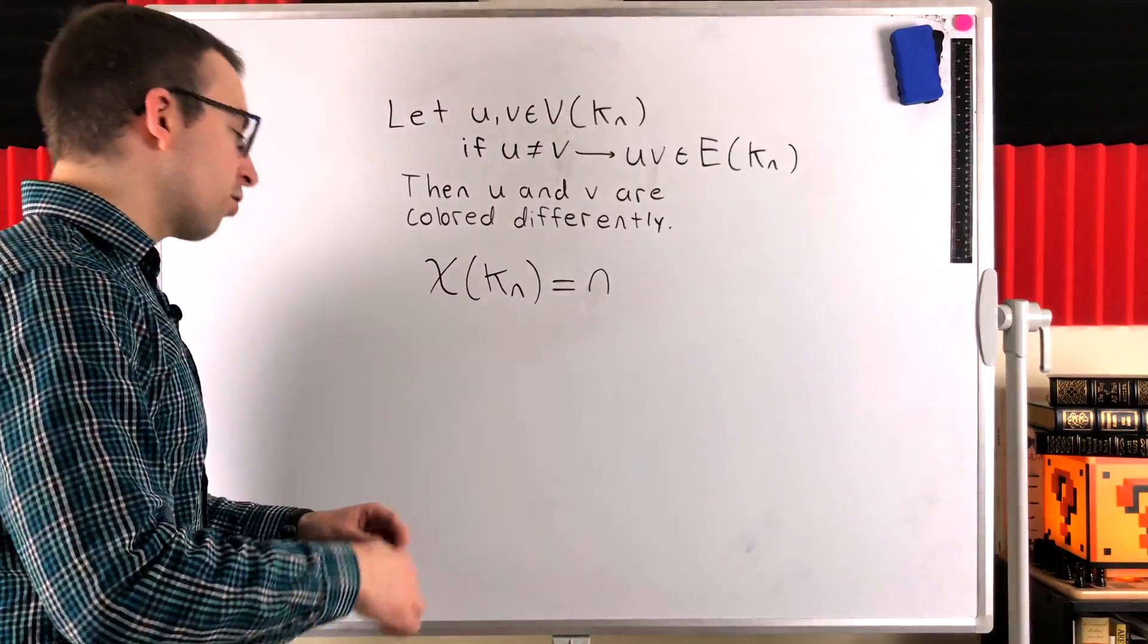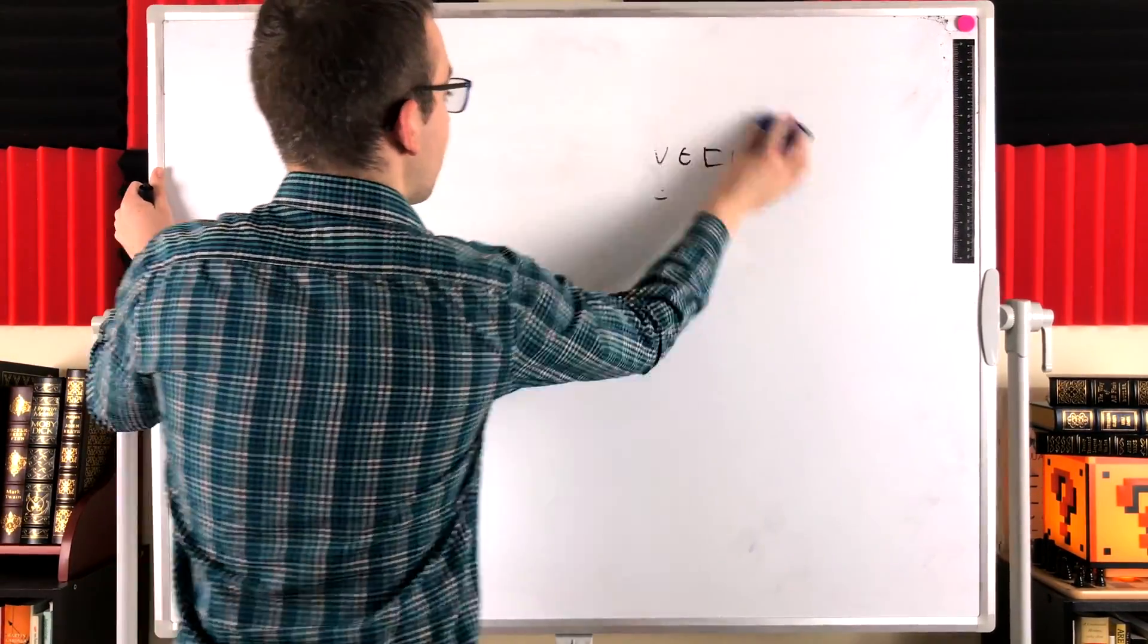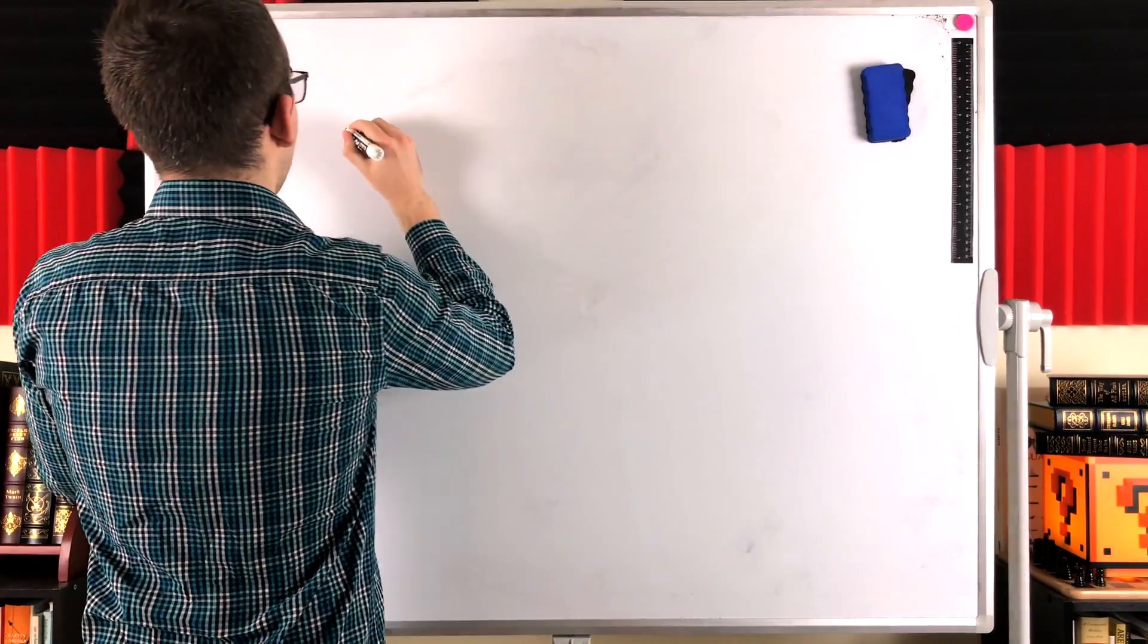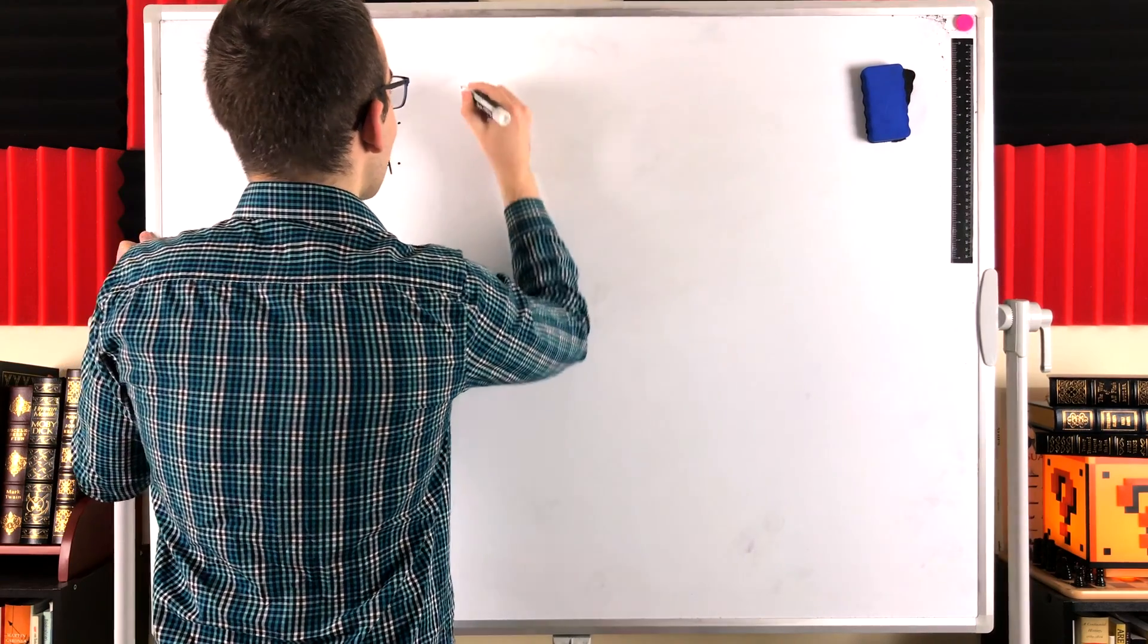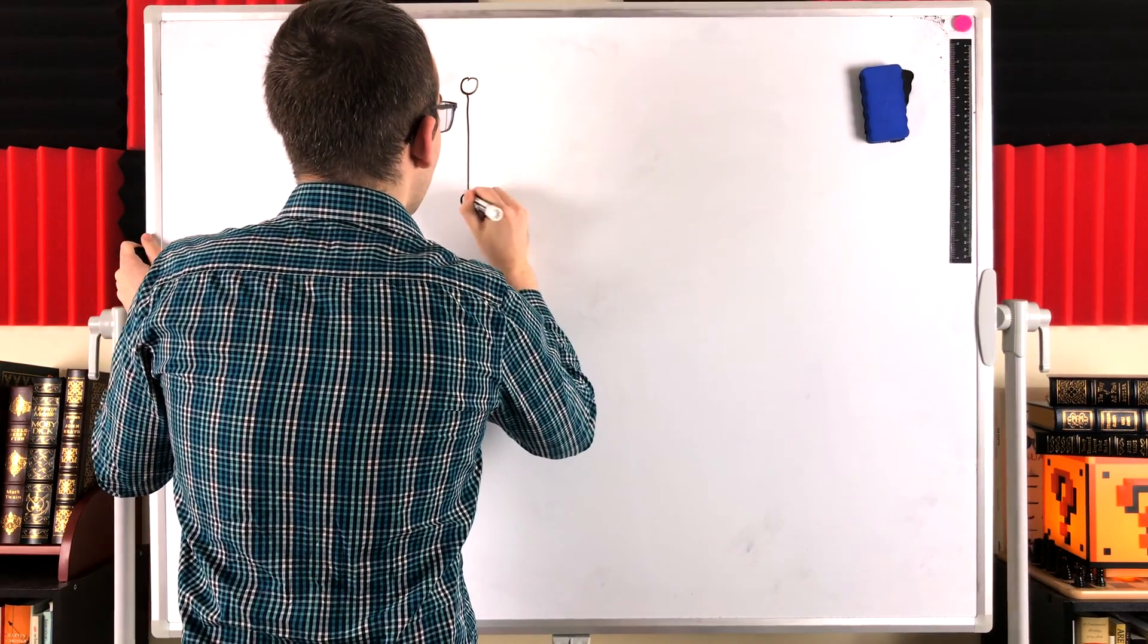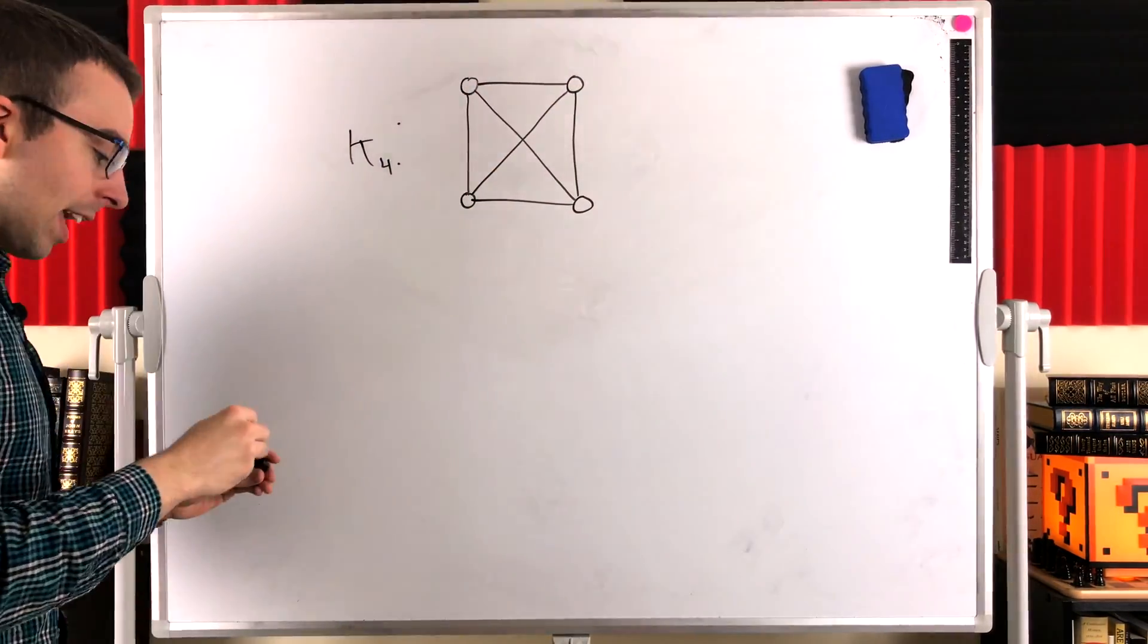So with all that said, let's just finish things off by taking a look at a coloring of a specific complete graph. We'll take a look at the complete graph that I think is easiest to draw, but also kind of interesting to look at, which is the complete graph on four vertices. So here's our complete graph, K4.